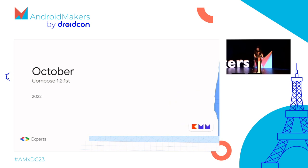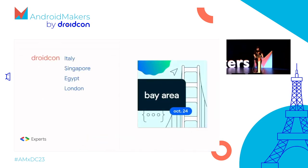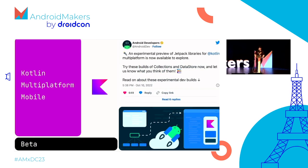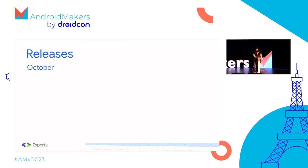October saw a number of conferences: DroidCon Italy, Singapore, Egypt, and London, and the start of the Android Summit — a multi-national, multi-location event starting in the Bay Area and moving to London. JetBrains announced the beta of Kotlin Multiplatform Mobile, allowing developers to share logic between Android and iOS. Google in tandem released the experimental preview of some JetPack multiplatform libraries, starting with the Datastore and Annotations library.